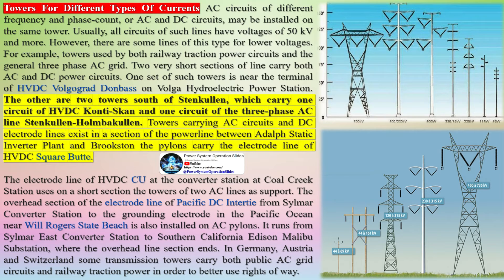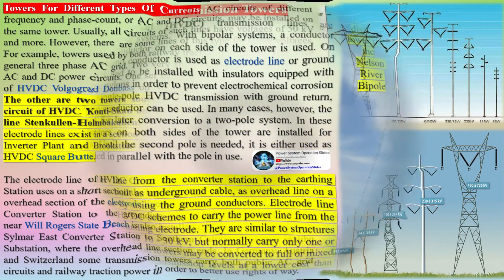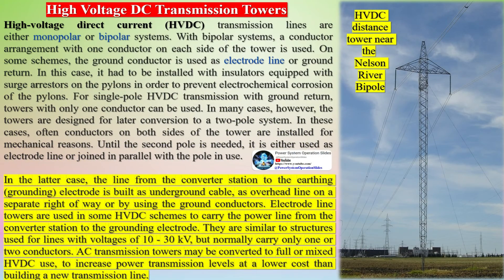AC circuits of different frequency and phase count, or AC and DC circuits, may be installed on the same tower. Usually all circuits of such lines have voltages of 50 kV and more, though there are some lines of this type for lower voltages — for example, towers used by both railway traction power circuits and the general three-phase AC grid.